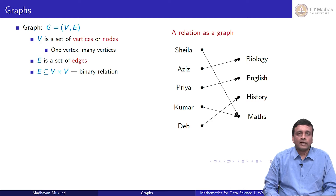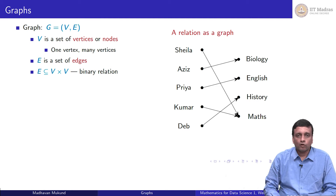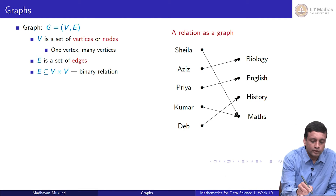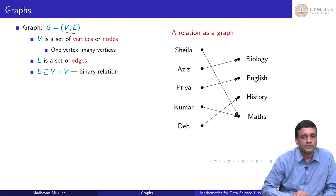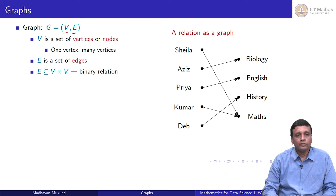To begin with, a graph consists of a set of nodes or vertices and edges between them. A graph therefore has two components: a set of vertices and a set of edges. Vertices is the plural of vertex — we have one vertex, many vertices. We use interchangeably either the term node or vertex as a name for these elements.